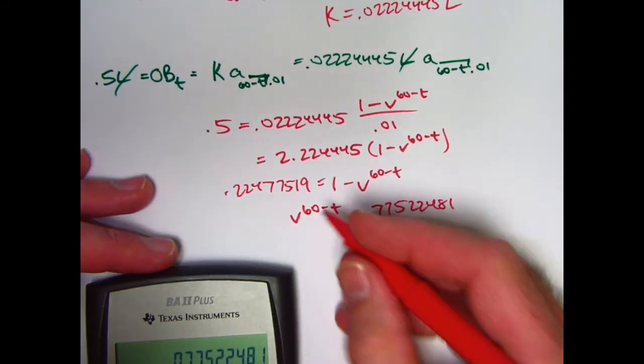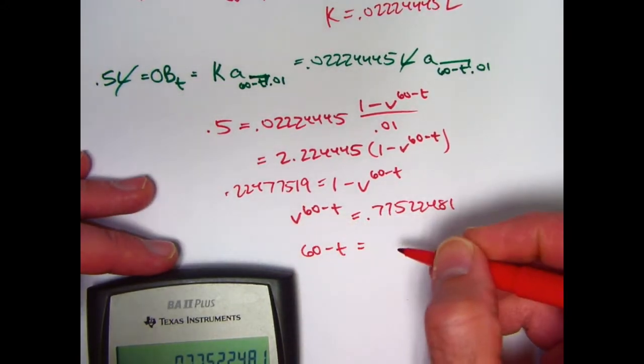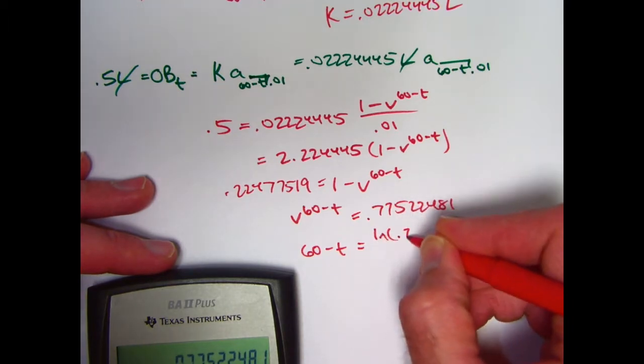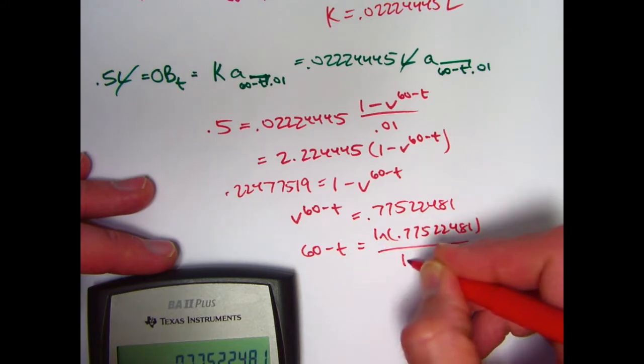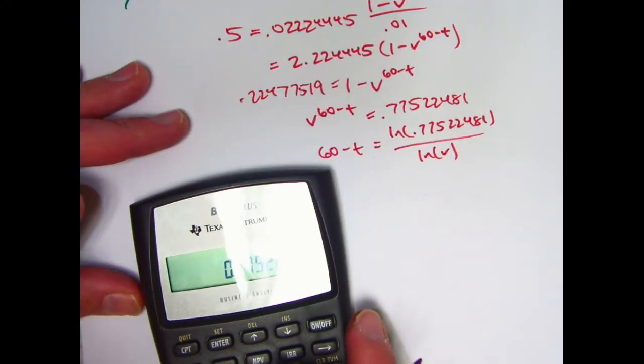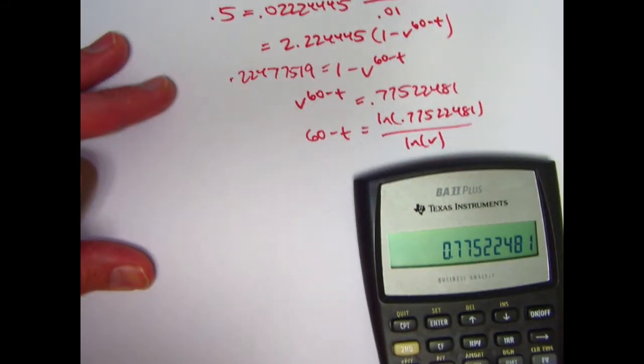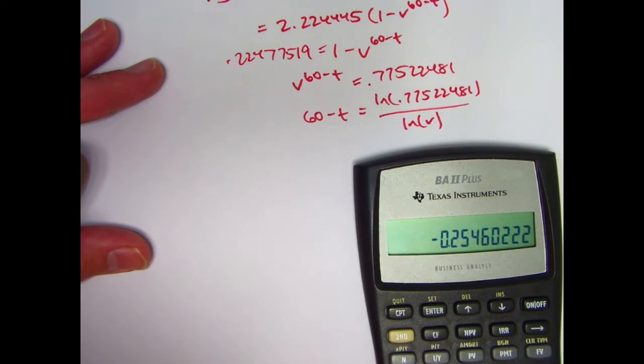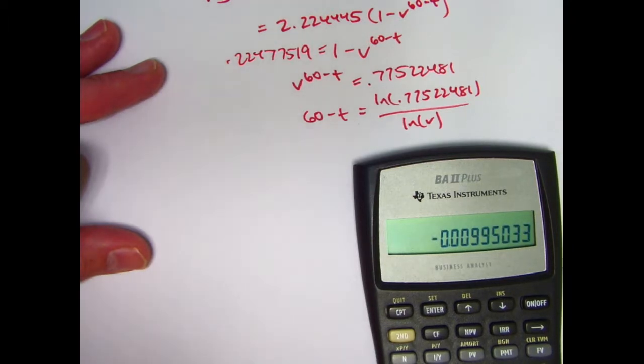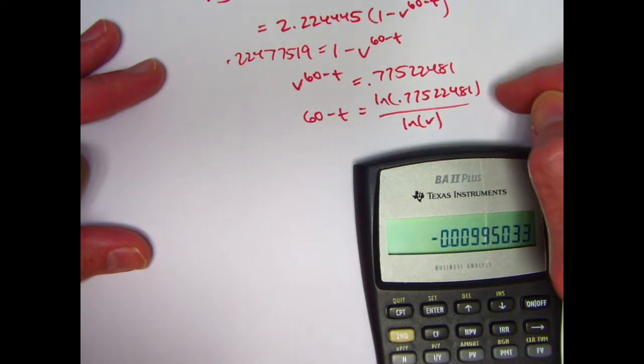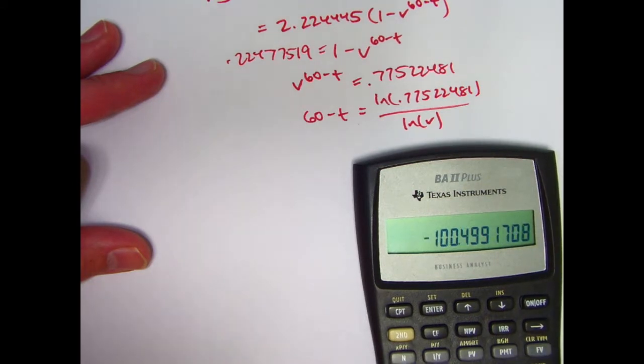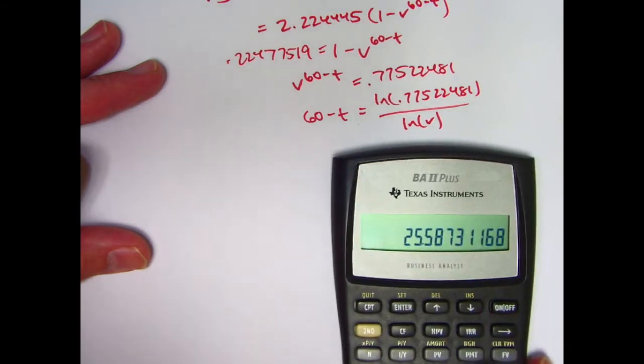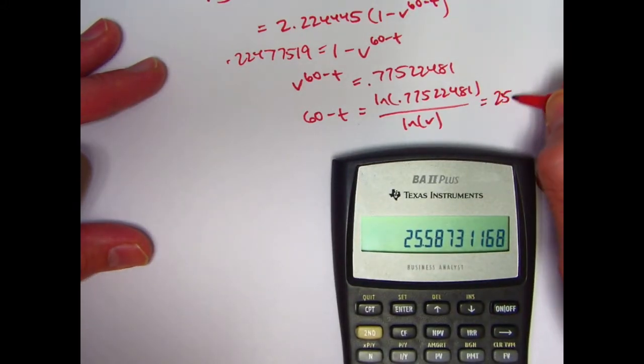Now take the log of both sides. 60 minus T, after using properties of logs, is going to be the natural log of 0.77522481 divided by the natural log of V. Let's find the natural log of this thing here first. It's negative. Don't worry about that. The natural log of V is going to be negative as well. Let me store this in register 0. What is V? It's 1.01 is 1 plus I. Take its reciprocal to get V. Take the natural log of that. There it is. I need to divide this by that so I can take the reciprocal of this and multiply by what was in register 0.